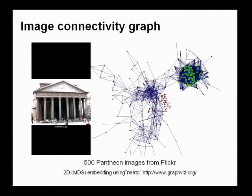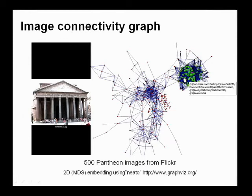The basic idea is to work purely from the photographs, not from the tags — since we're computer vision people, we want to explore what you can do just from the vision side. What I'm showing here is what we call an image connectivity graph. These green and red dots represent photos, in this case a 500-image collection. The blue edges are between photos that have features in common. We lay this out as a 2D embedding so you can visualize the connectivity of these images.